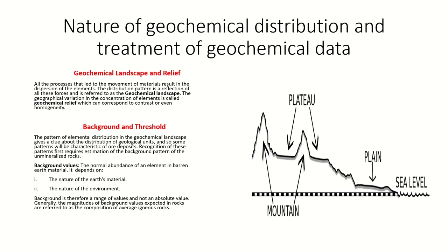We are understanding geochemical landscape and relief in a way similar to geomorphic landscape and relief. The pattern of elemental distribution that emerges because of the number of processes operating beneath the earth as well as on the surface produces the geochemical landscape. This geochemical landscape gives a clue about the distribution of geological units. Our geological unit of interest is the ore deposit, and so these patterns will point out to some ore deposits.